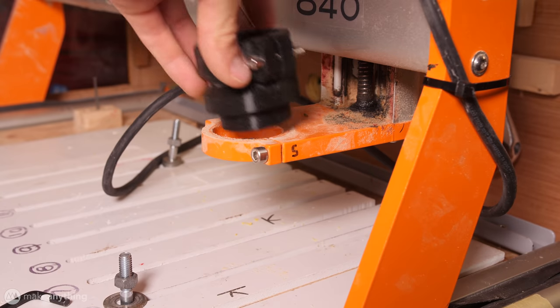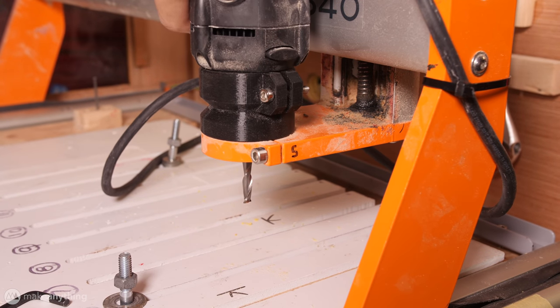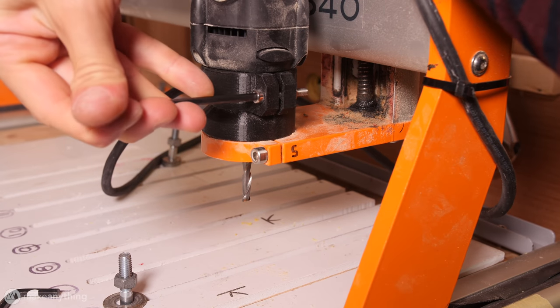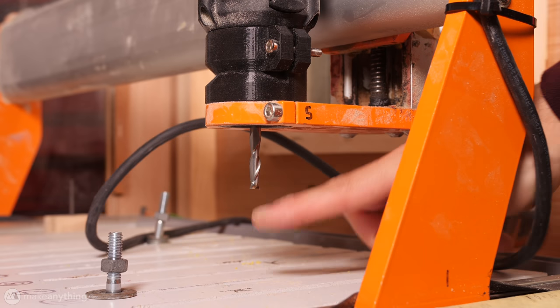It's essentially a spacer that goes right here and lifts up the entire rotary tool, so that I've got that extra space underneath. Now you can see that there is no wasted space underneath this carriage. It's nothing but that cutting bit. And I've got a lot of extra space underneath.